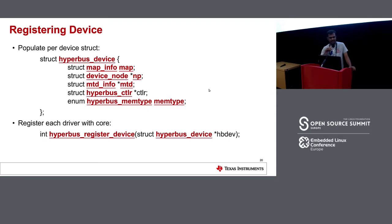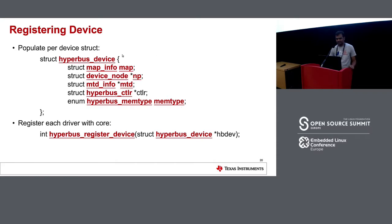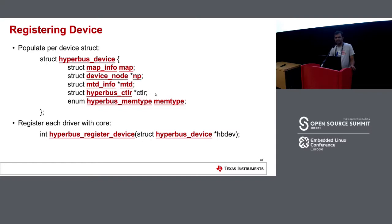Once the driver implements the hyperbus_ops, for every HyperFlash device discovered on the bus you register a hyperbus_device onto the core. The most important field is map_info, which represents the start and end address of the physical map where you can access the flash device, followed by a pointer to the device node, the mtd struct which gets populated once the device is registered, and the hyperbus controller structure containing the hyperbus_ops. Once populated, you call hyperbus_register_device to register the device with the core.